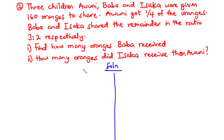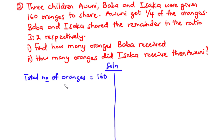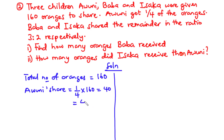From the question, the total number of oranges to be shared is 160. Awinnie got one-fourth of the oranges, so Awinnie's share = 1/4 × 160 = 40. Therefore Awinnie had 40 oranges. Baba and Isaka shared the remainder in the ratio 3:2 respectively, so now let's find the remainder.